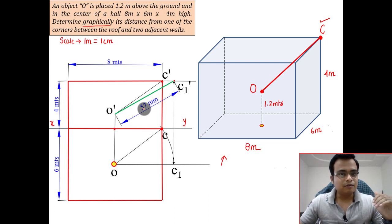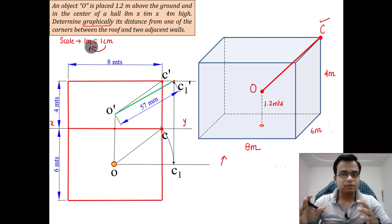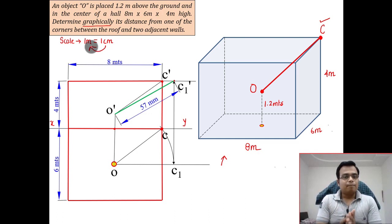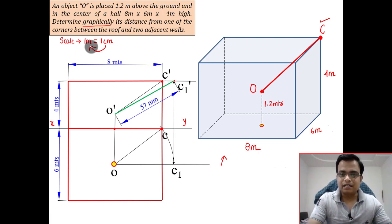Which on conversion would become 5.7 meters. So the true distance between the object and the corner is 5.7 meters. That's it, guys, nothing else.